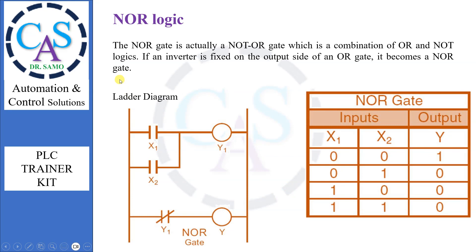Move further for NOR logic. The NOR gate is actually a NOT OR gate, which is a combination of OR and NOT logics. If an inverter is fixed on the output side of an OR gate, it becomes a NOR gate. The ladder diagram exhibits the NOR logic. From the table: if both inputs are low, output will be high. If input 1 is low and input 2 is high, the output will be low. If input 1 is high and input 2 is low, the output will be low. If both inputs are high, the output will be low.